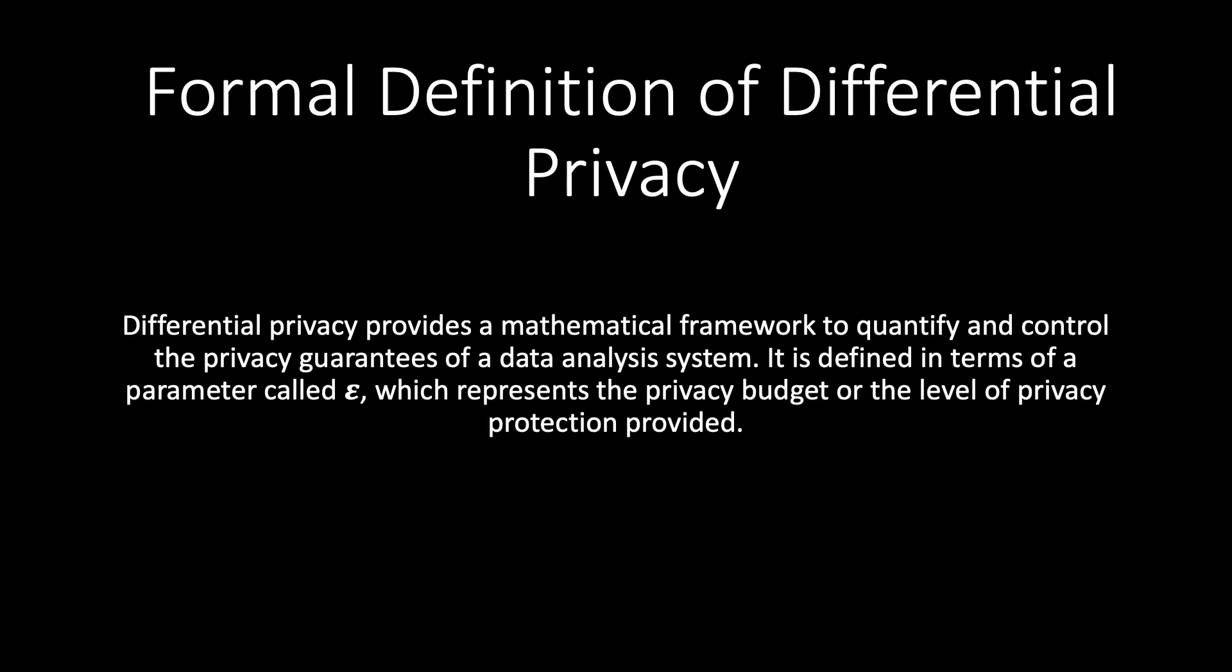So the textbook definition is differential privacy provides a mathematical framework to quantify and control the privacy guarantees of a data analysis system. It is defined in terms of a parameter called epsilon which represents the privacy budget or the level of protection provided.